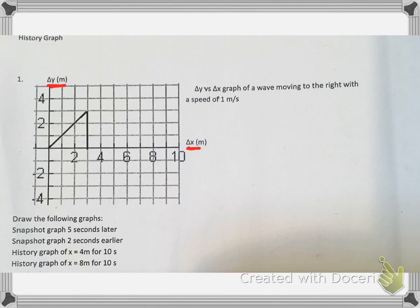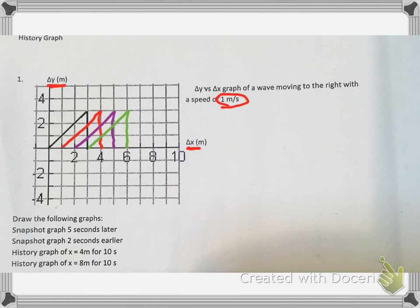Since this wave is moving at one meter per second, after one second it will be like this. After two seconds, it will be here. After three seconds, the wave is going to look like this. So here we're just drawing this at different instances in time — the black is time zero, and then we have one, two, this is t equals three seconds, t equals zero seconds.